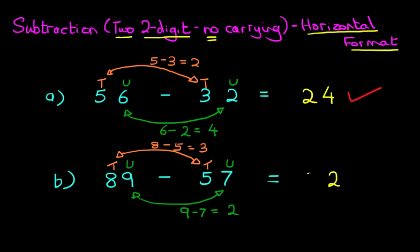So we can write down 3 over here. So 89 minus 57 equals 32.